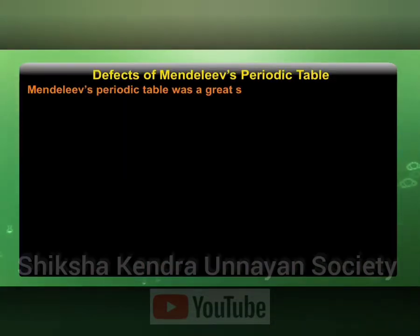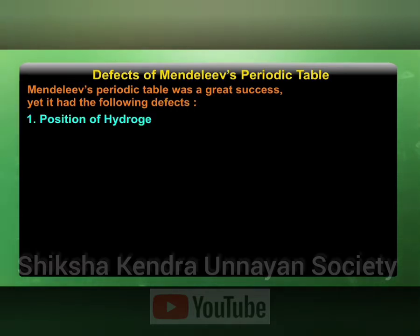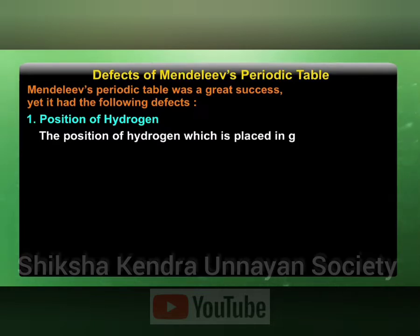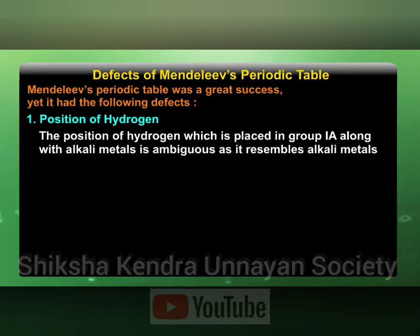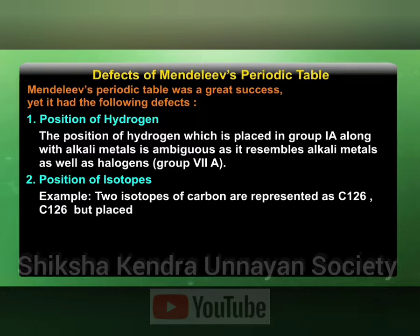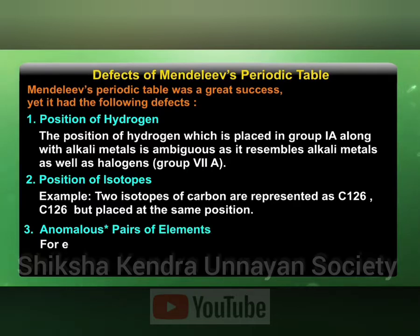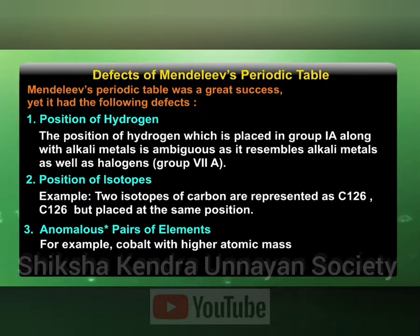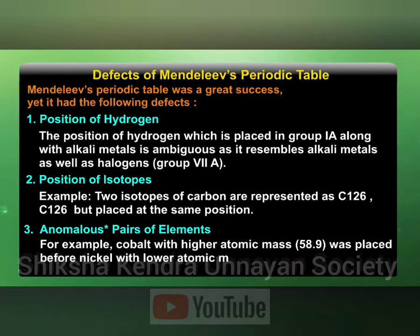Mendeleev's periodic table was a great success yet it had the following defects. First, position of hydrogen: the position of hydrogen, which is placed in group 1A along with alkali metals, is ambiguous as it resembles alkali metals as well as the halogen group, that is group 7A. Second, position of isotopes: for example, two isotopes of carbon C-12 and C-14 are placed at the same position. Third, anomalous pairs of elements: for example, cobalt with higher atomic mass of 58.9 was placed before nickel with lower atomic mass of 58.7.